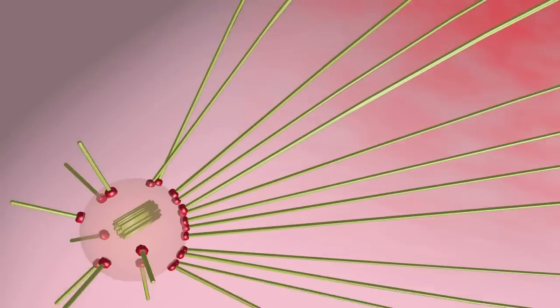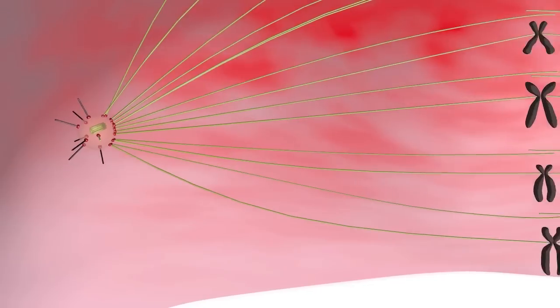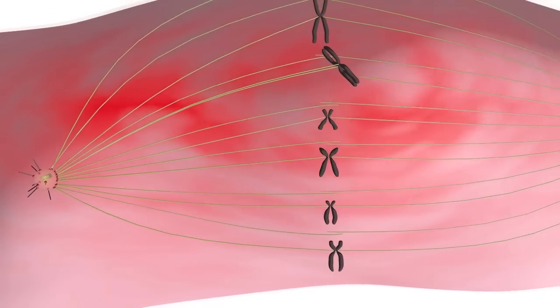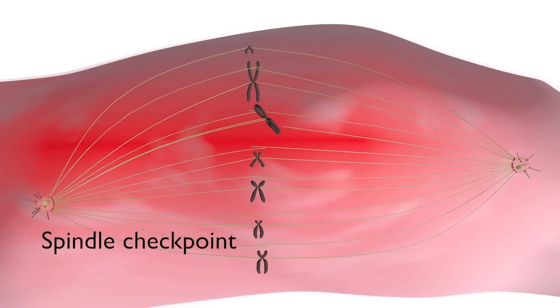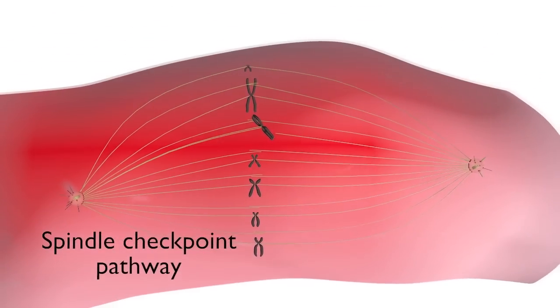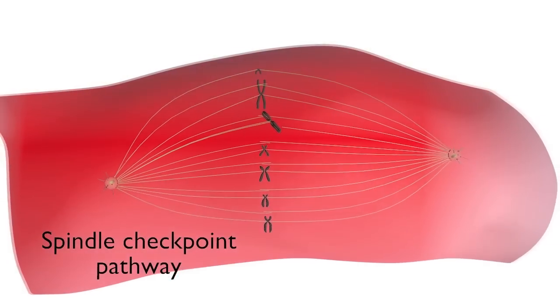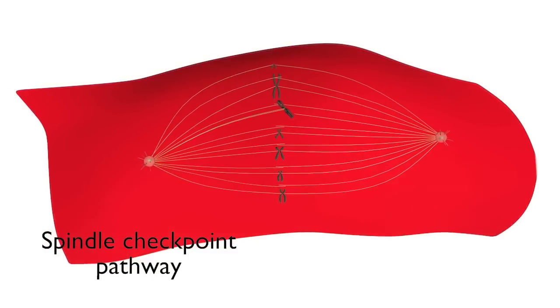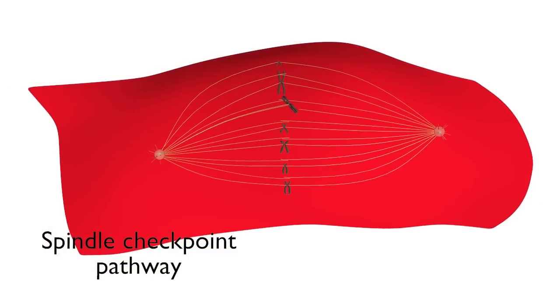To avoid premature sister chromatid separation, kinetochores that are not stably attached to microtubules generate a signal that activates a regulatory mechanism called the spindle checkpoint pathway. This checkpoint pathway blocks sister chromatid separation and other aspects of cell cycle progression until chromosomes are bi-oriented.